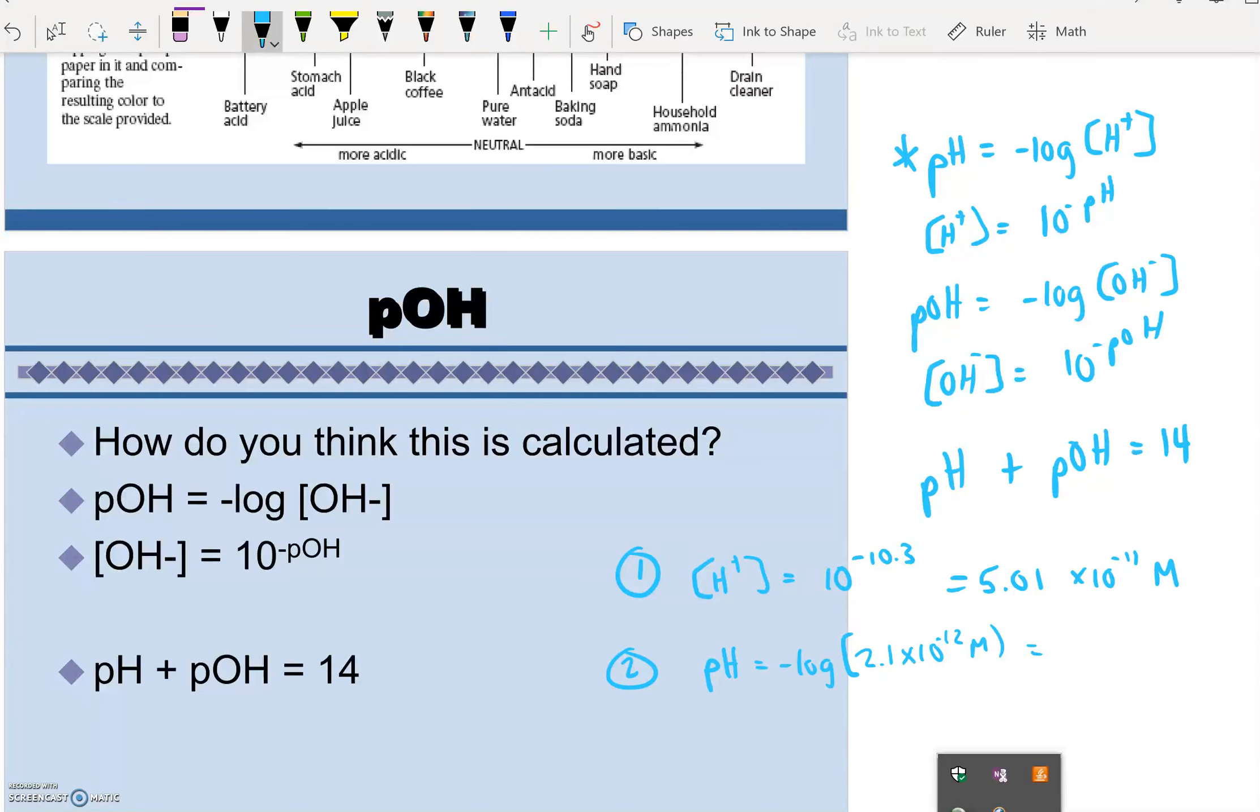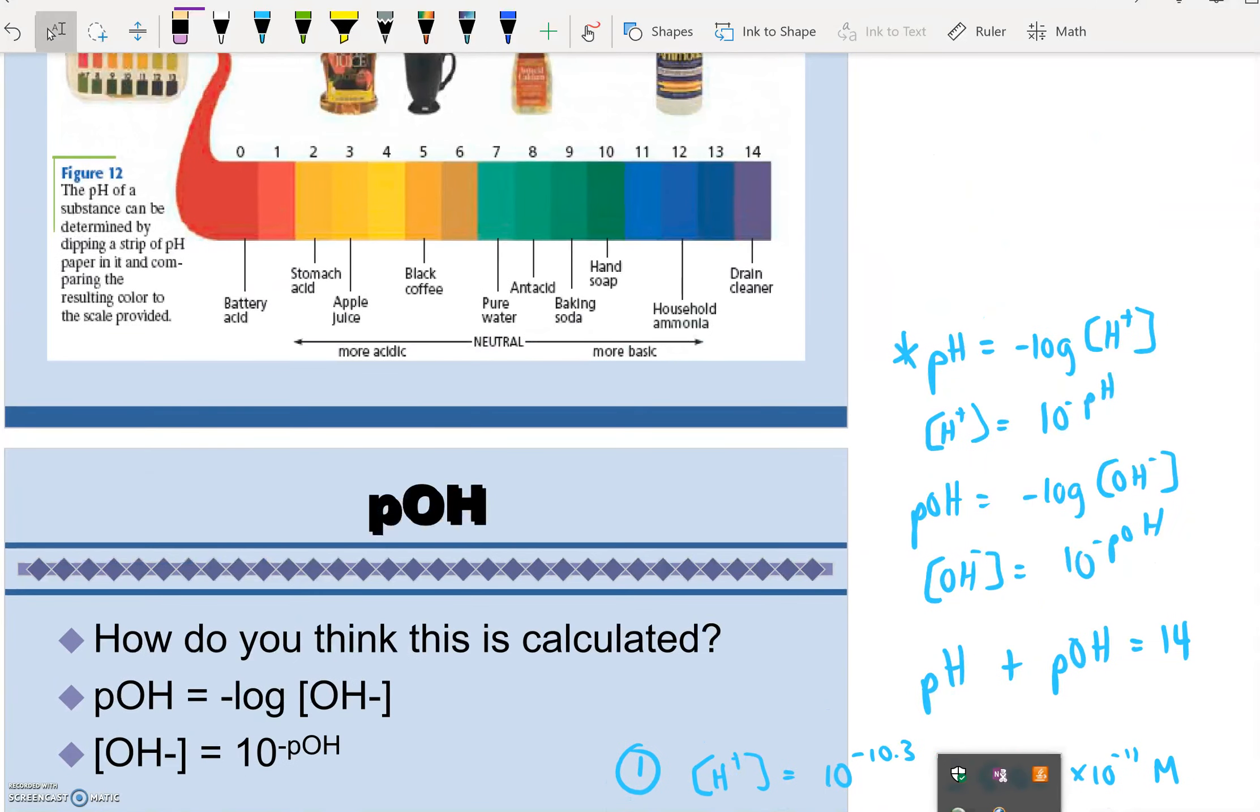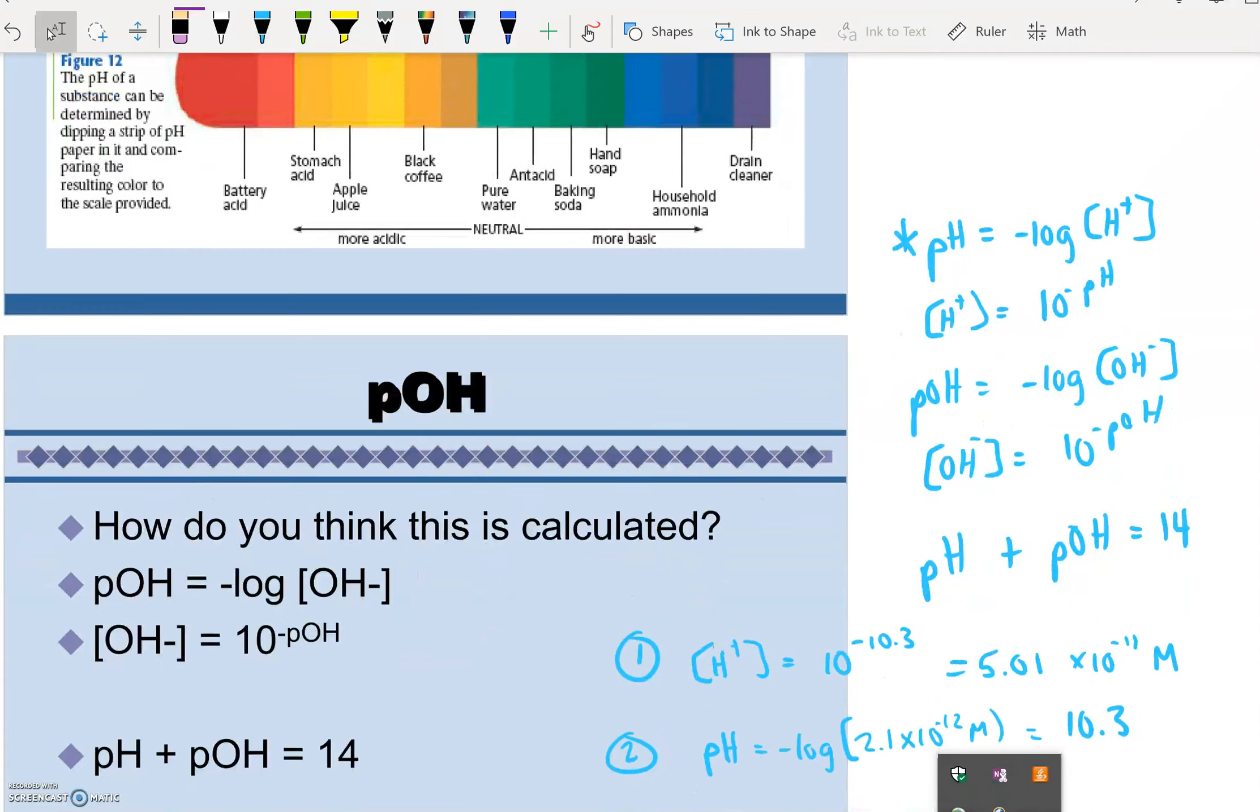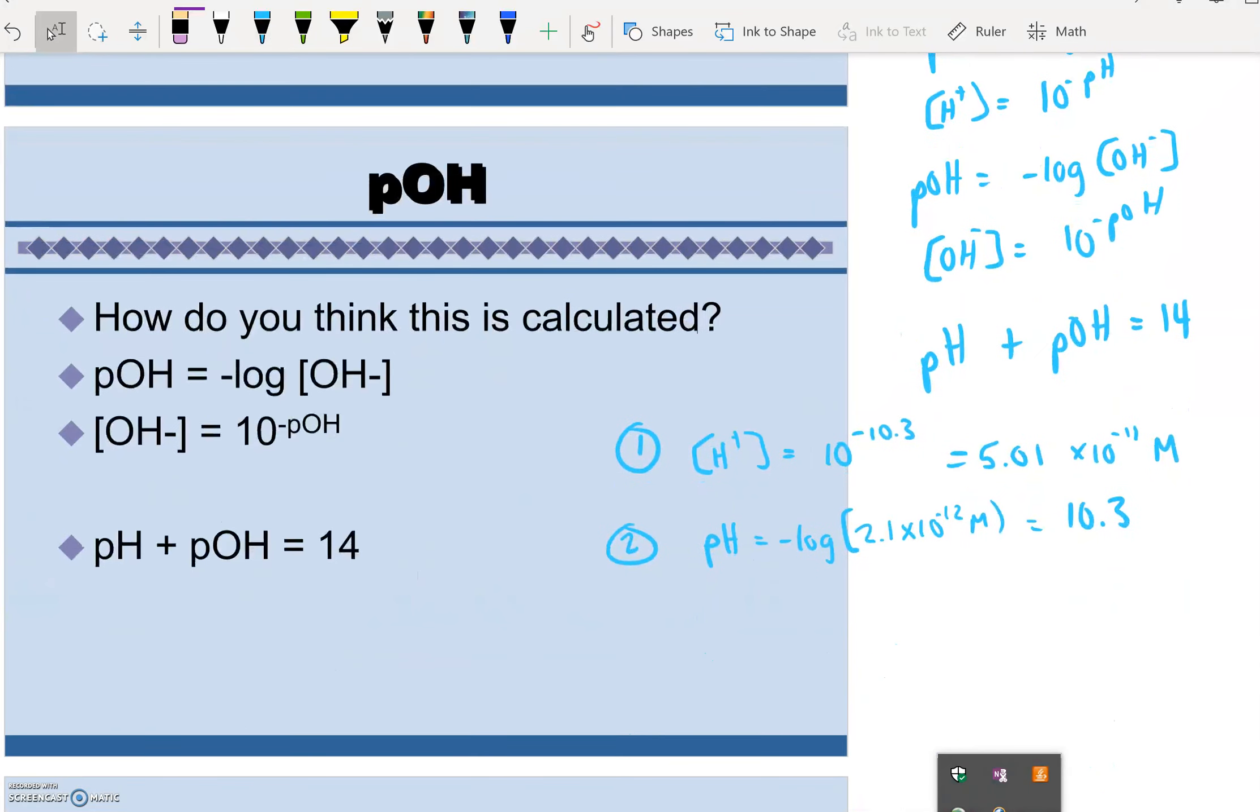And I type that in. So your log button is over next to the number 7. So negative log 2.1 times 10 to the negative 12 gives us 10.3. So there's our pH. We know that this solution is basic. If you have a pH of 10.3, that puts us here on the basic side of the pH scale.